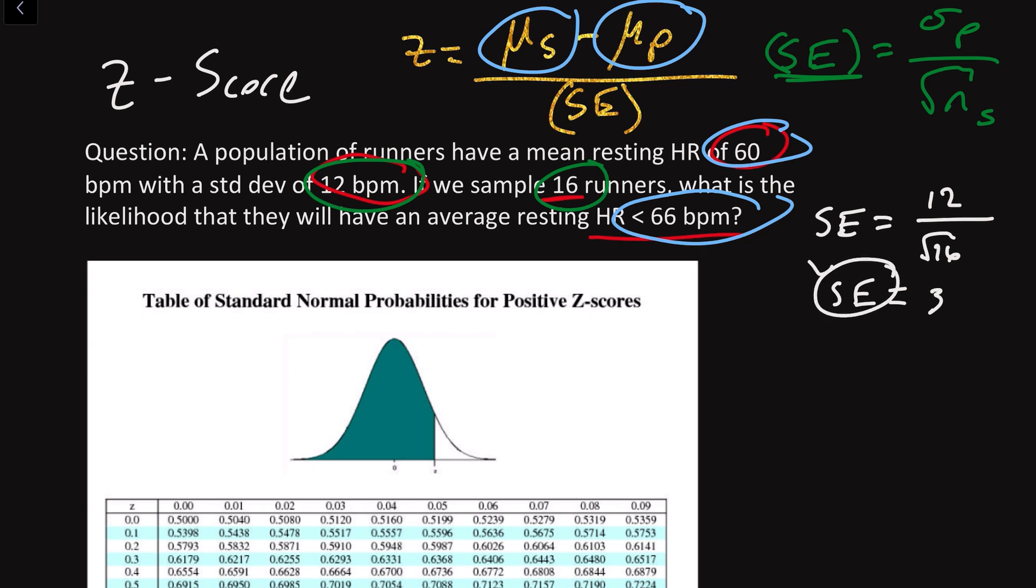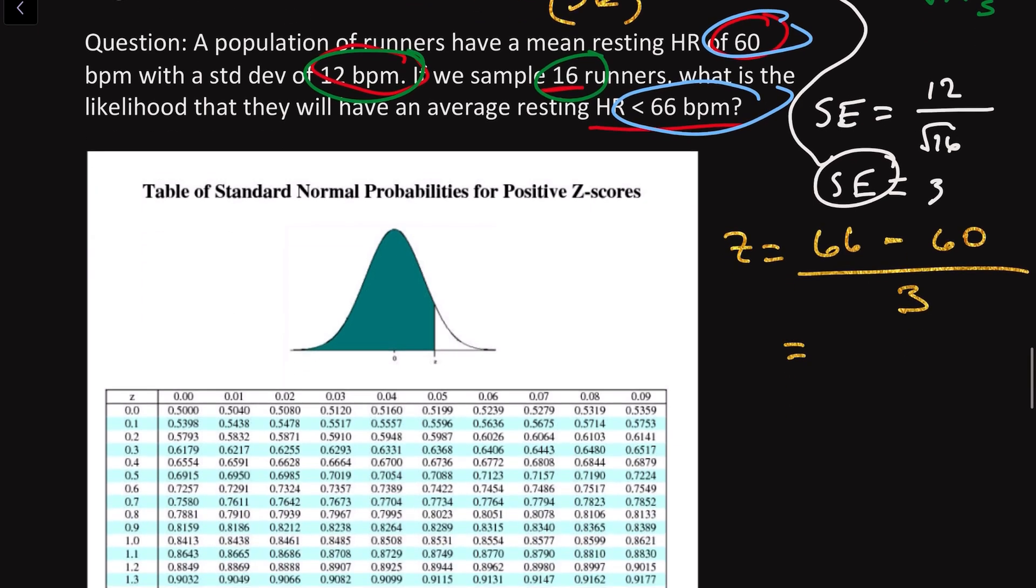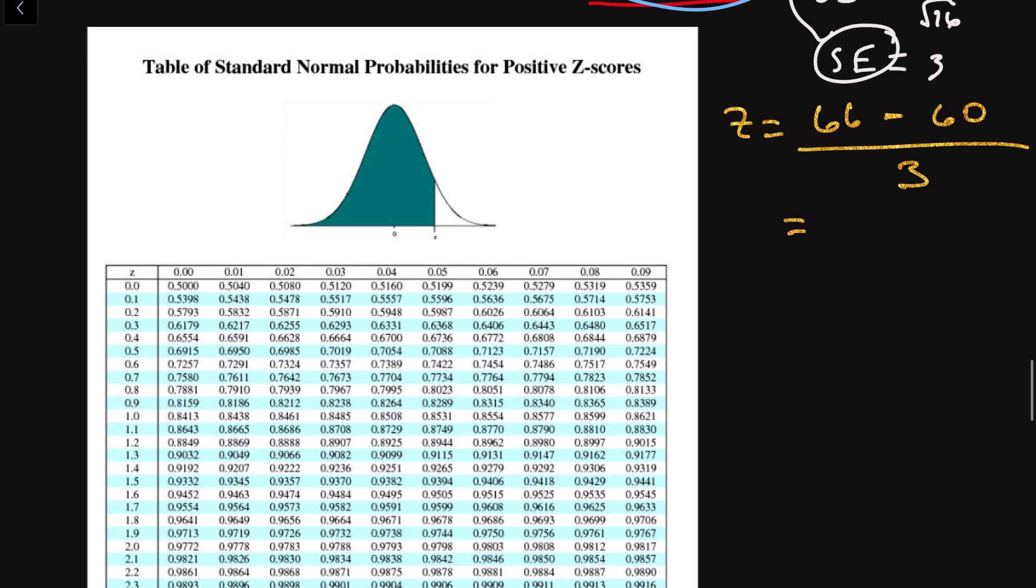We're going to take this term and plug it into Z. Now what we do is say that Z is equal to the average of our sample, which was 66 beats per minute, minus the average of our population, which was 60, divided by our standard error, which was 3. What we end up getting here is 6 over 3, which is equal to 2.00. That is Z.